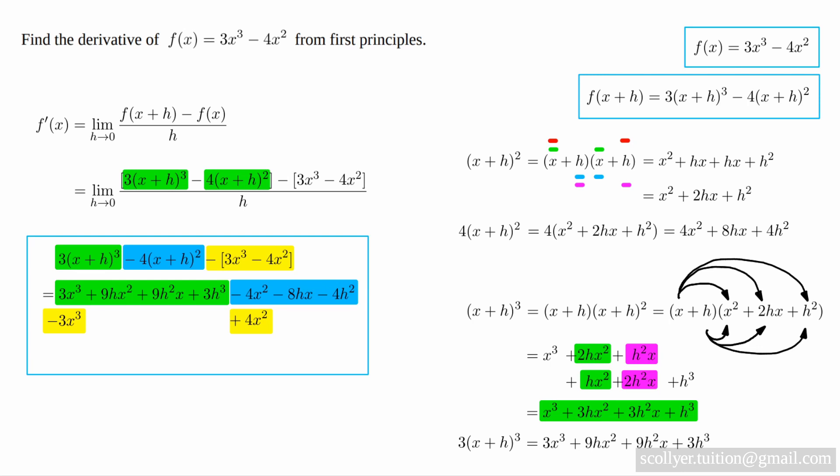Now we can do some cancellation to obtain 9hx squared plus 9h squared x plus 3h cubed minus 8hx minus 4h squared. So, on making that substitution, we obtain this expression.